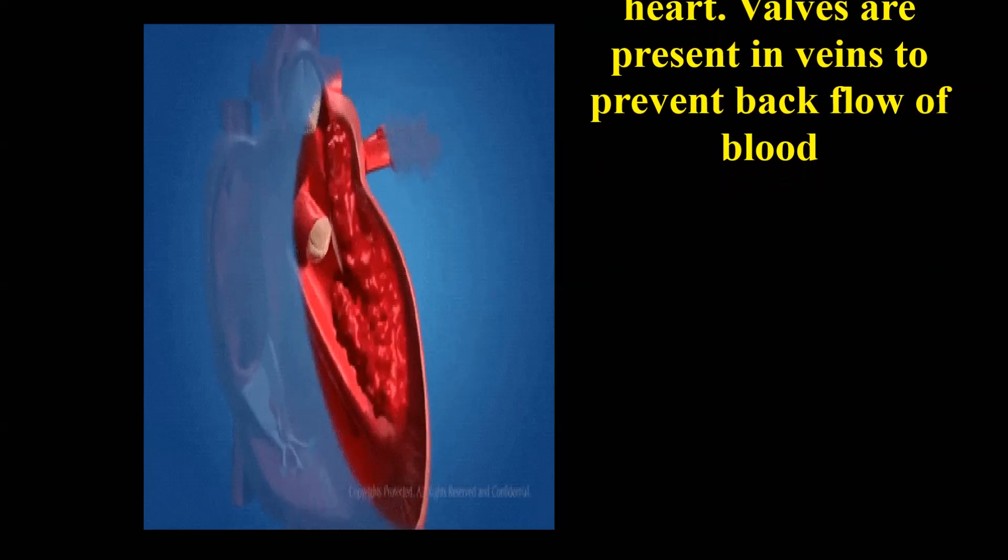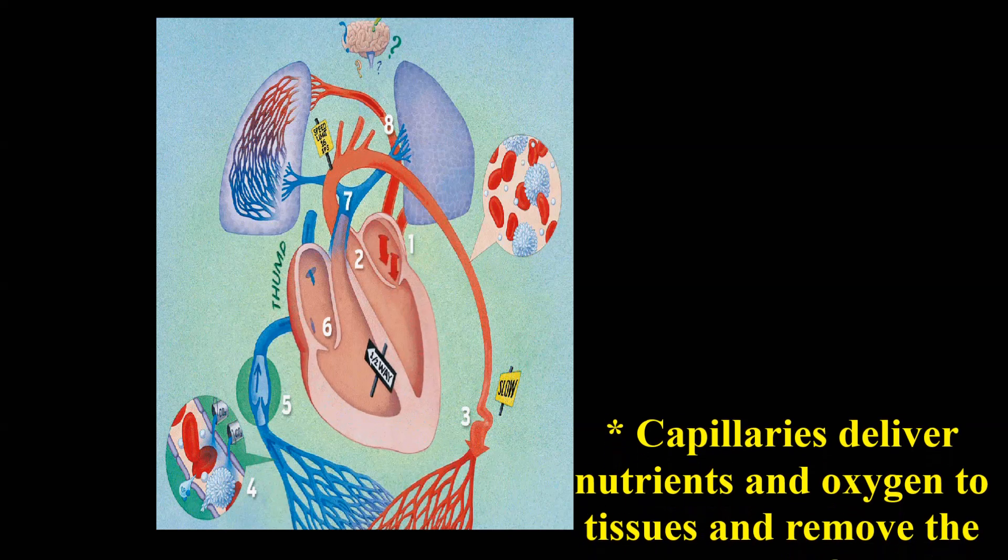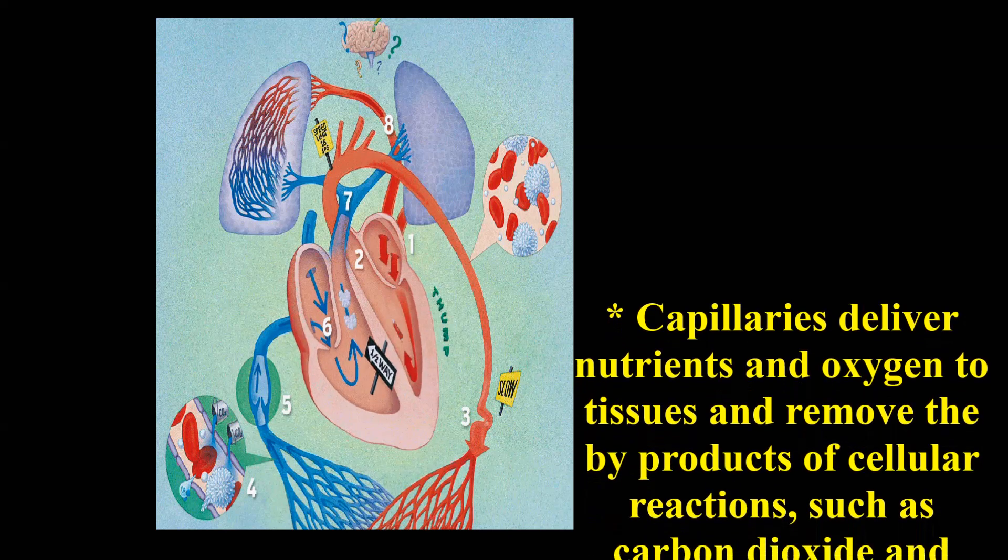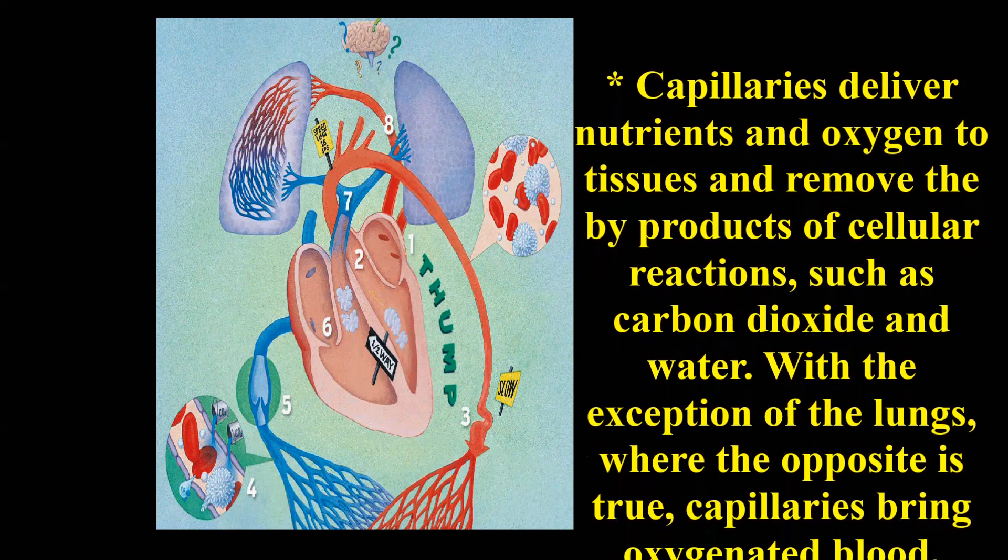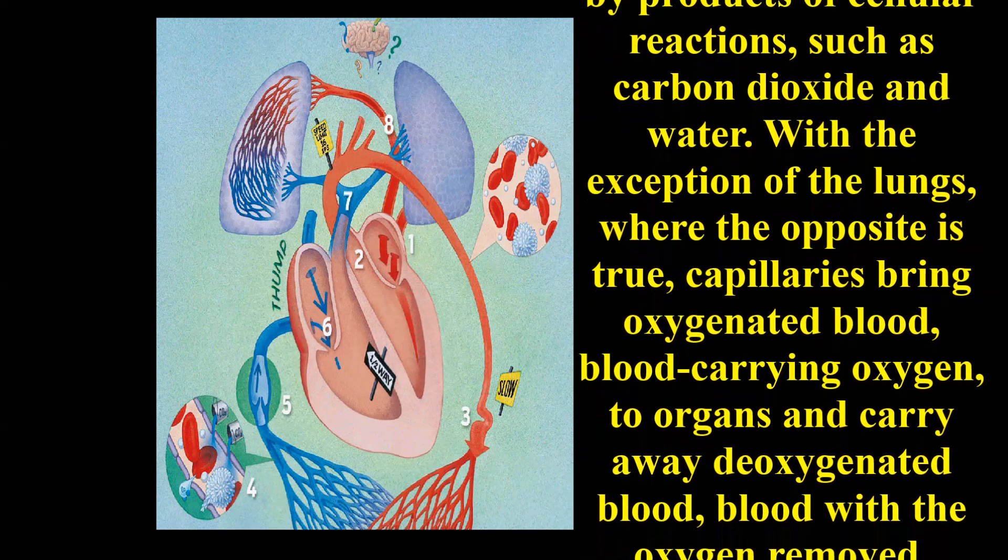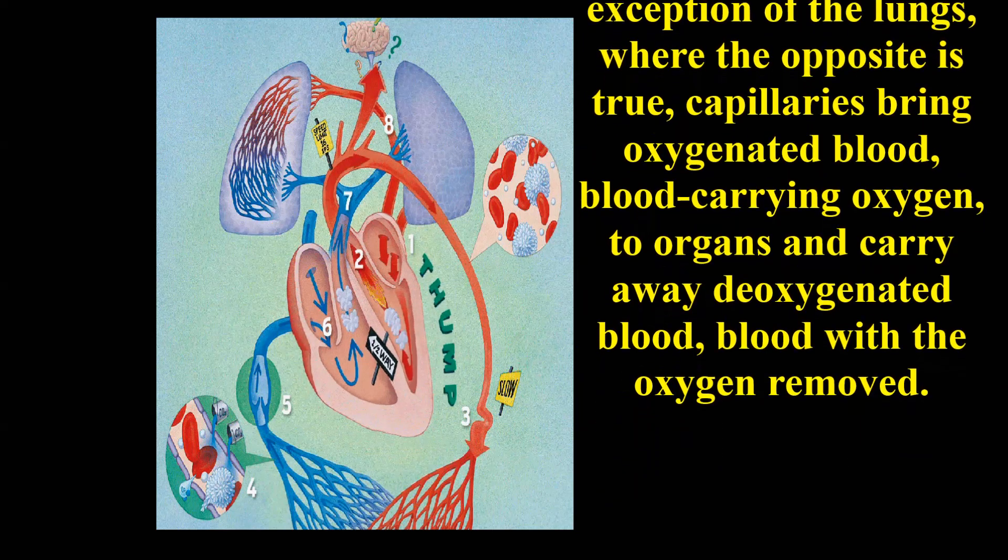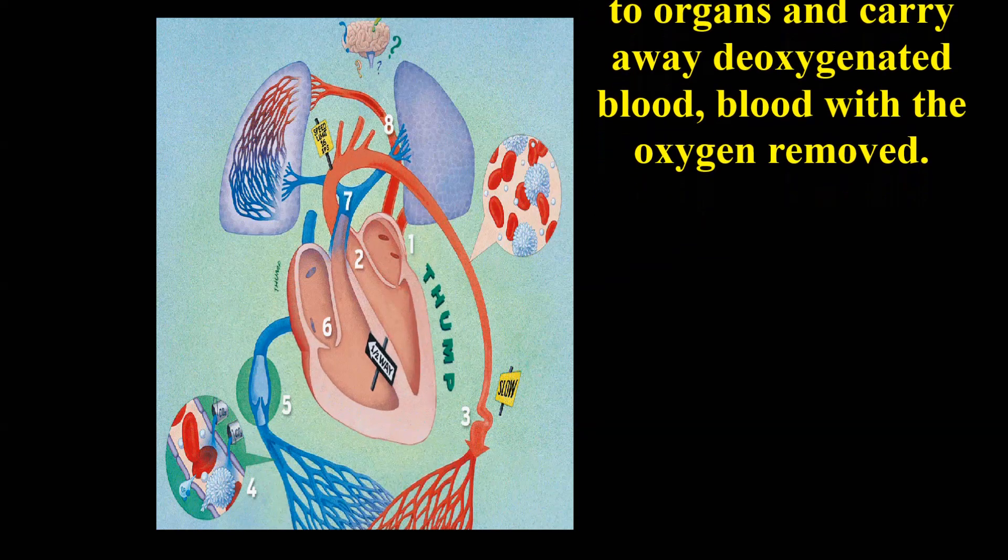Valves are present in veins to prevent backflow of blood. Capillaries deliver nutrients and oxygen to tissues and remove the by-products of cellular reactions, such as carbon dioxide and water. With the exception of the lungs, where the opposite is true, capillaries bring oxygenated blood to organs and carry away deoxygenated blood.